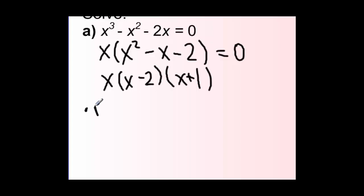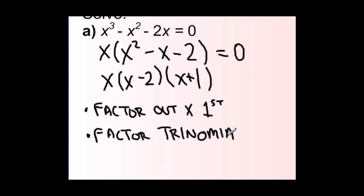We started by factoring out x first. Then we factored the trinomial. And then we can summarize by saying that the solutions to this polynomial are x equals 0, x equals positive 2, and x equals negative 1.